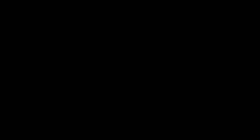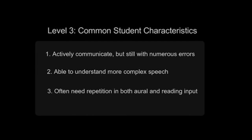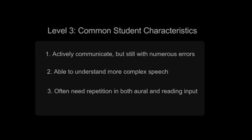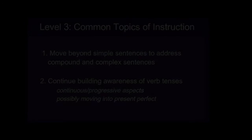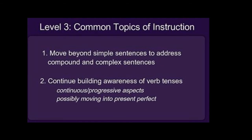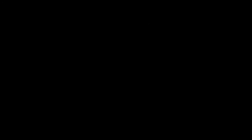Level three would be what CSU calls low intermediate and TESOL calls developing. At this level students are generally able to interact and communicate but still making numerous errors. They're able to understand a bit more complex speech, but still need repetition in aural input as well as in reading — they need to read things multiple times to understand them. At this developing level we're teaching compound and complex sentences, the continuous progressive aspect, and maybe moving into the present perfect.